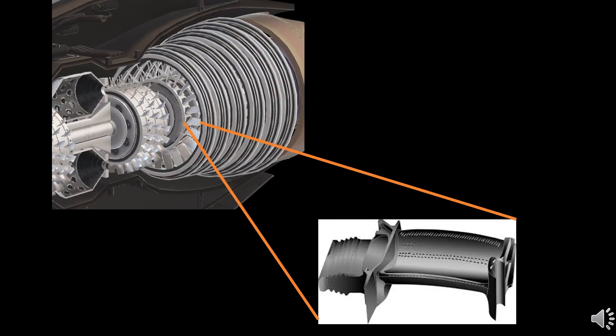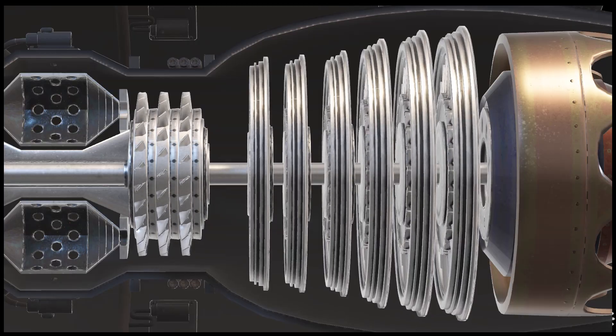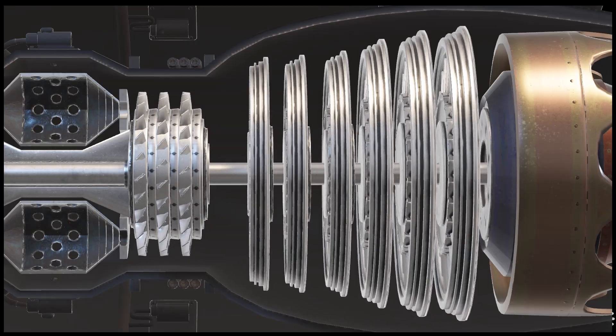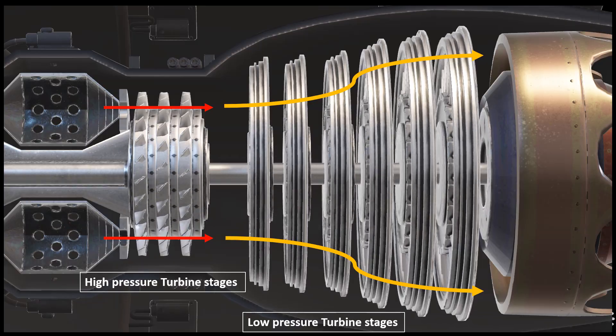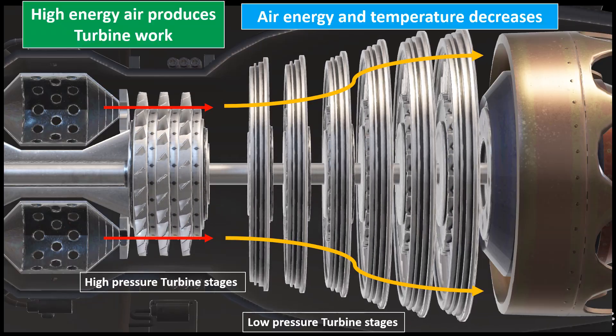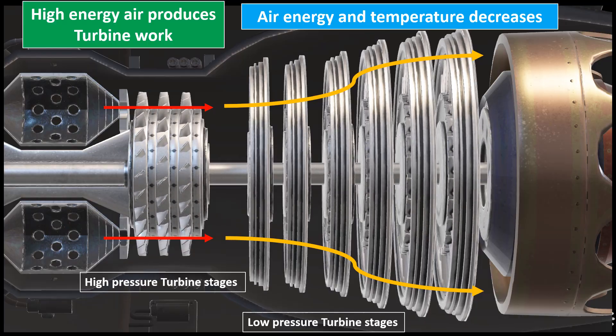The hot air from the combustion chamber enters the turbine stages. The turbine blades are designed such that when the hot air hits the blades, the turbine blades and rotors rotate, thus producing work. This is how the high energy hot air from the combustion chamber produces turbine work using its energy.